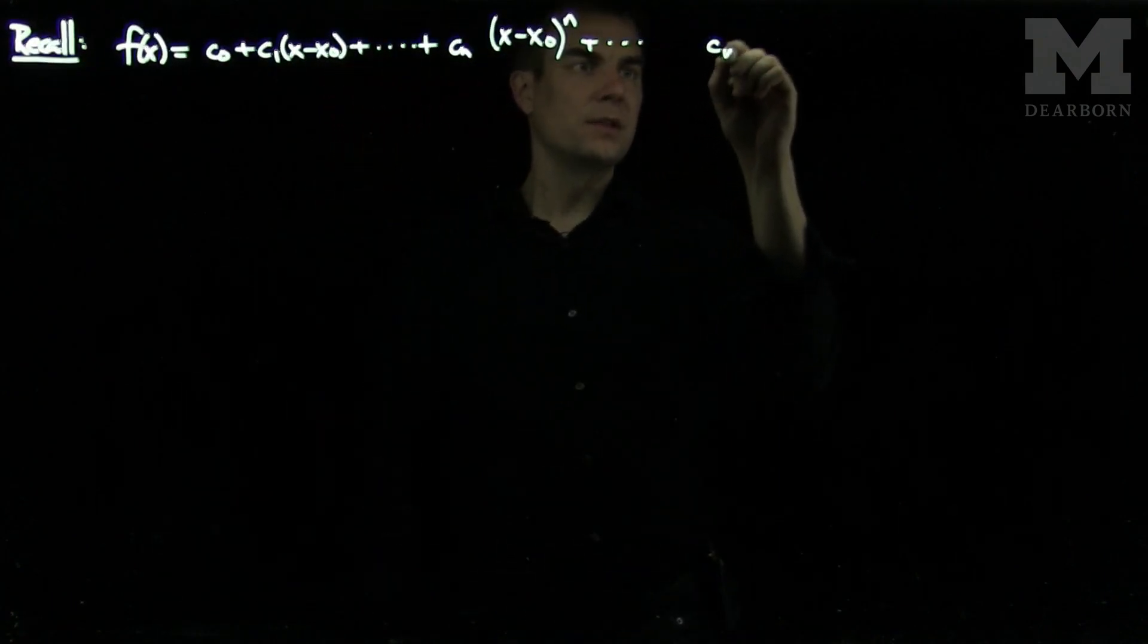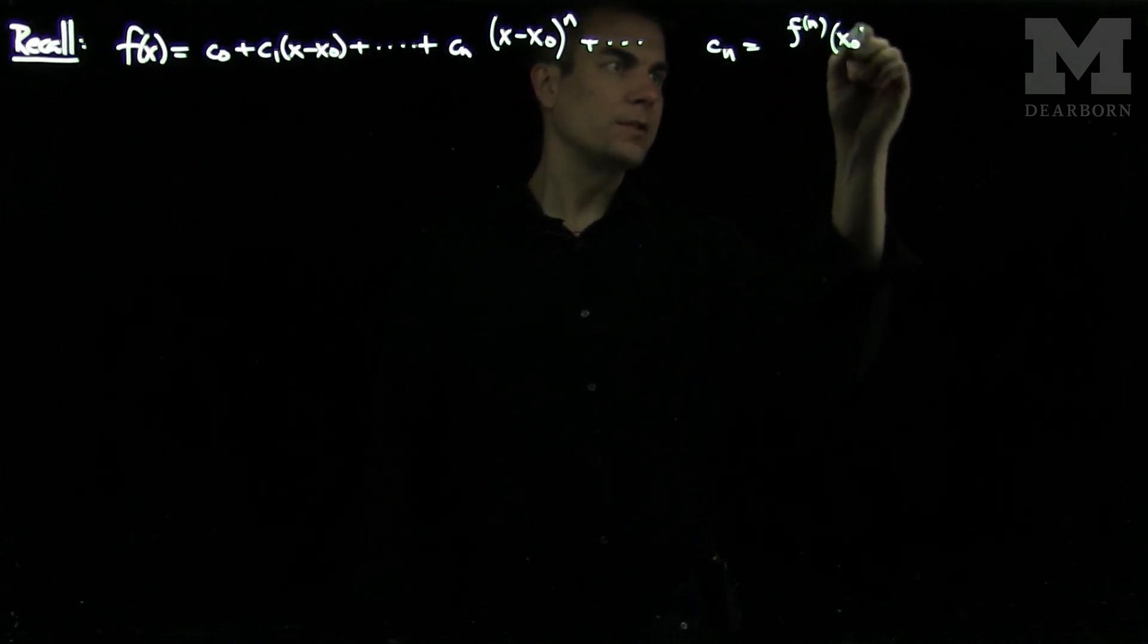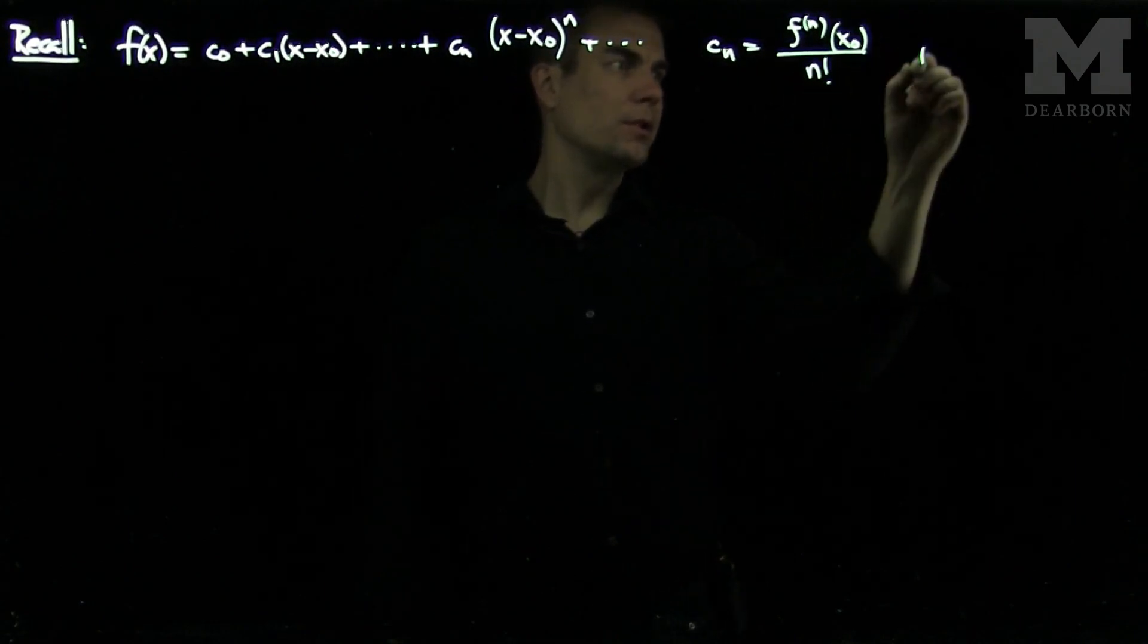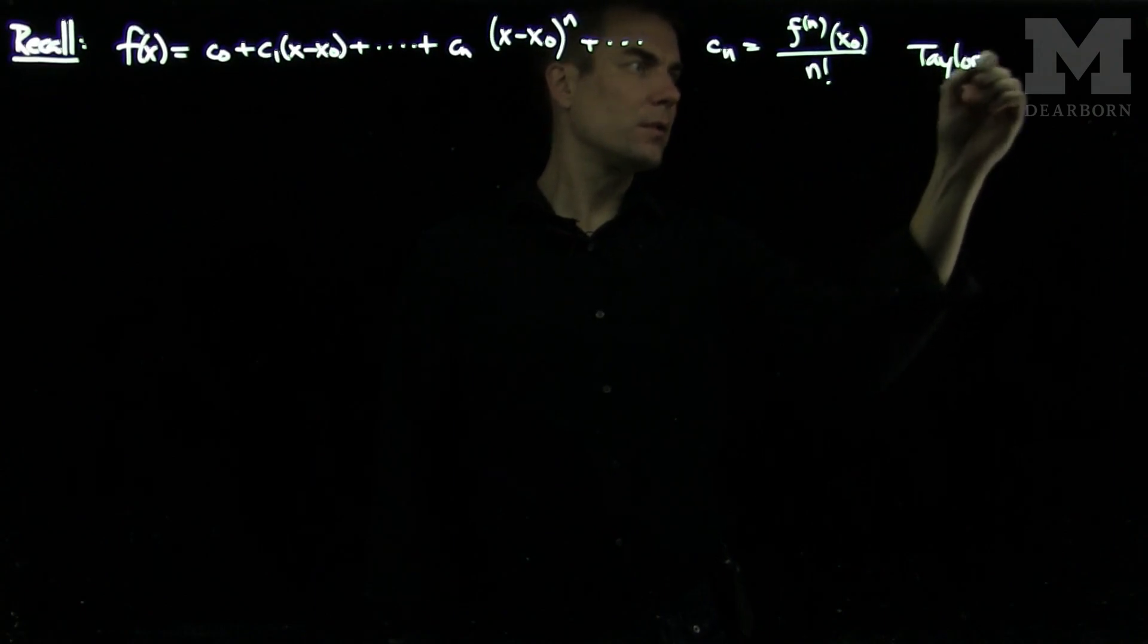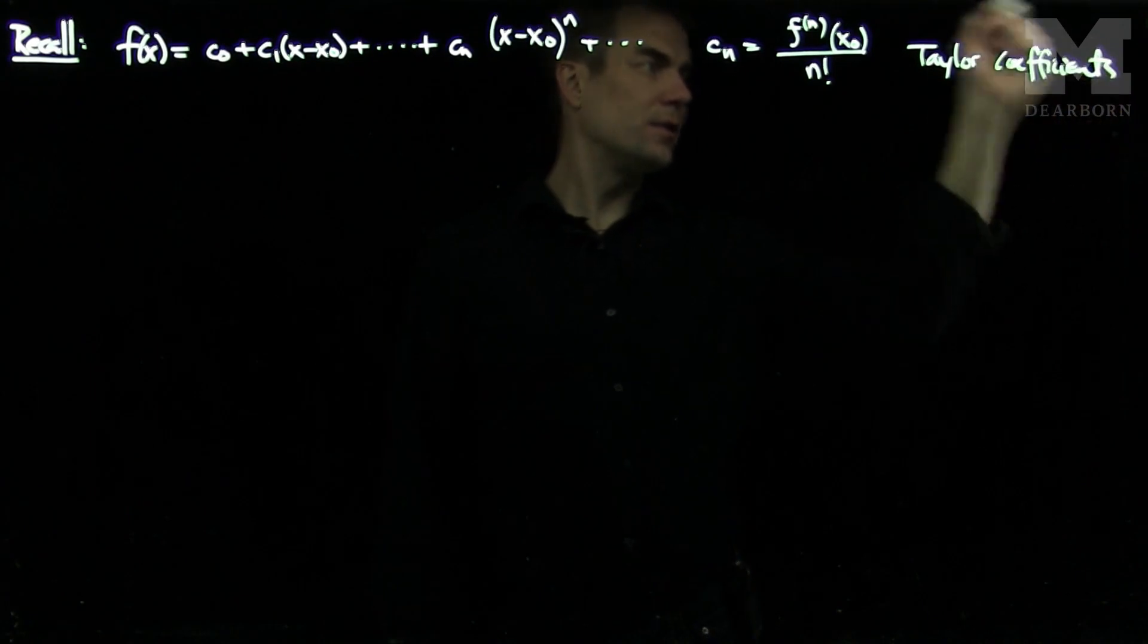And here the Cn are the nth derivative of the function at the point x0 over n factorial. These are our Taylor coefficients. These are our Taylor series.